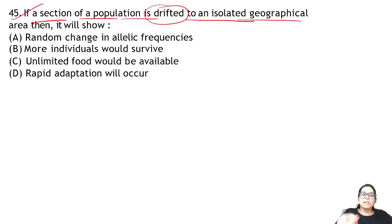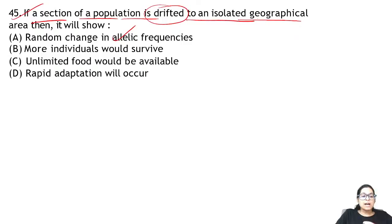Question 45: if a section of a population is drifted to an isolated geographical area, what will happen? There will be random change in the allelic frequency of that population — that is genetic drift.